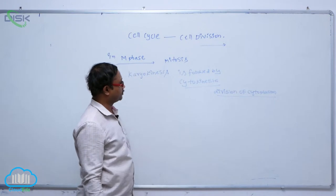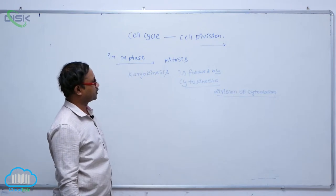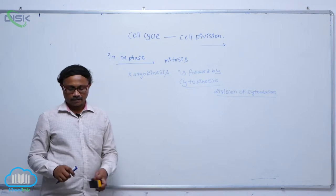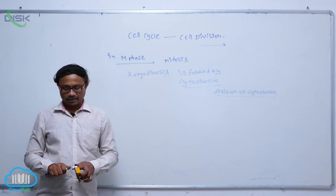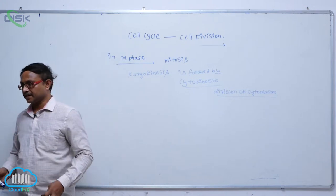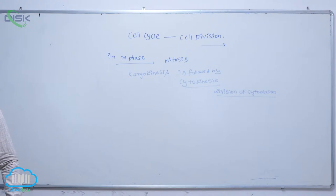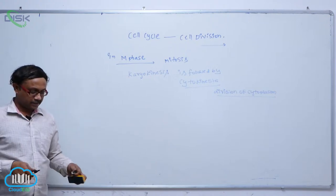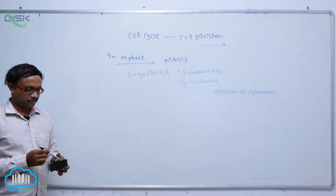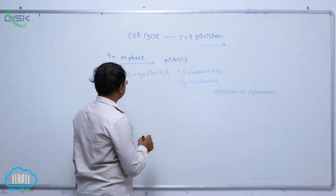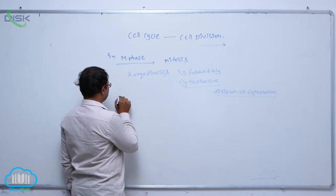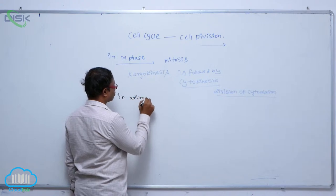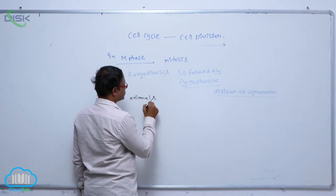Division of cytoplasm is known as the cytokinesis process. In the cytokinesis process, it occurs in animal cells and plant cells by different processes. For example, in animal cells,